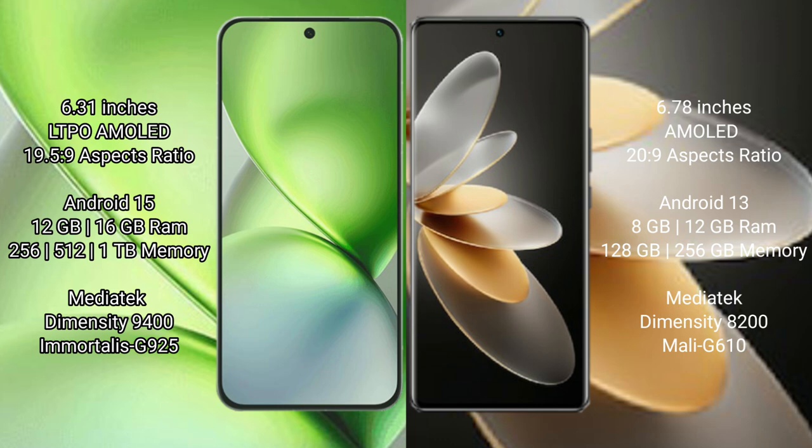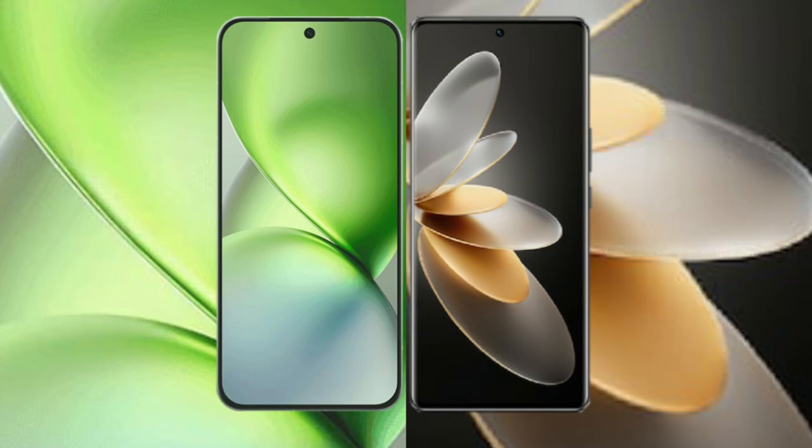Vivo X200 Pro Mini offers 256GB, 512GB, and 1TB internal storage, powered by a MediaTek Dimensity 9400 processor with GPU 925. Vivo V27 Pro comes with 8GB and 12GB RAM, 128GB and 256GB internal storage, and a MediaTek Dimensity 8200 processor with Mali-G610 GPU.